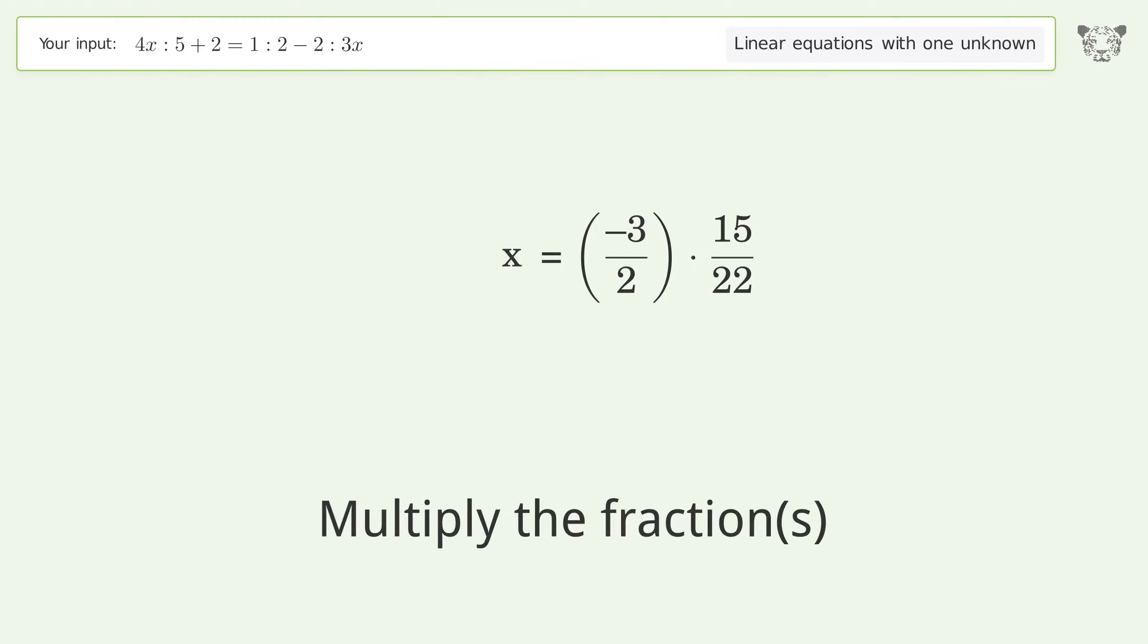Multiply the fractions. Simplify the arithmetic. And so the final result is x equals negative 45 over 44.